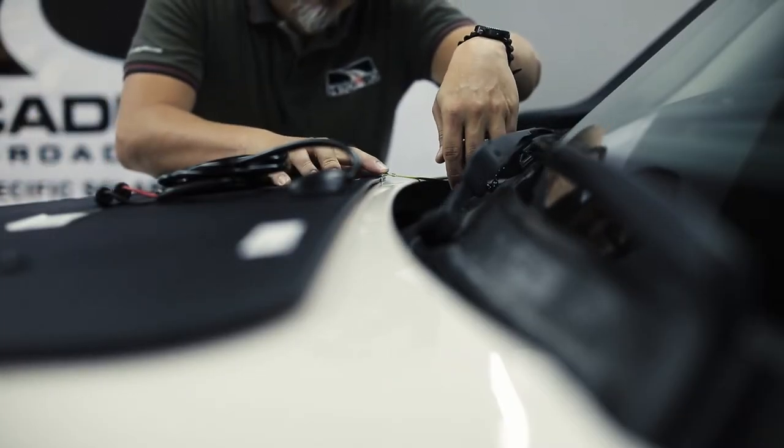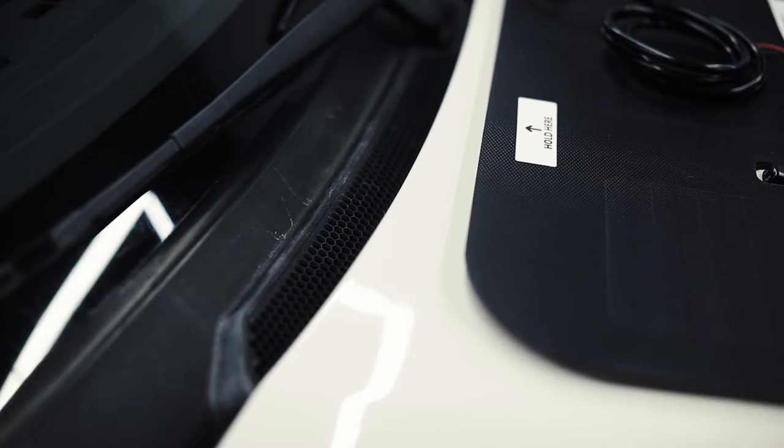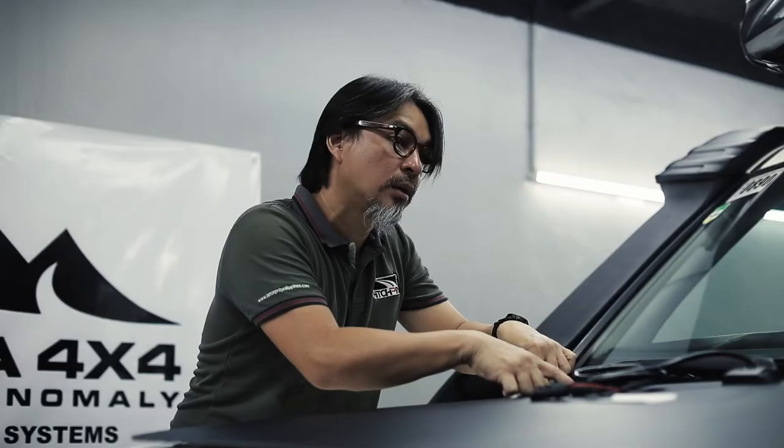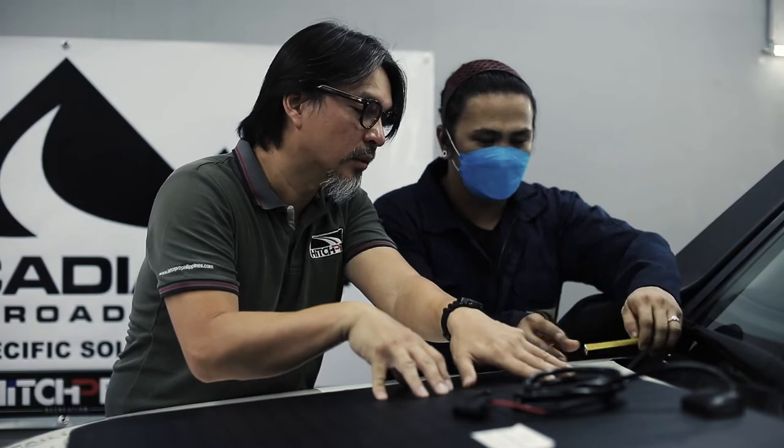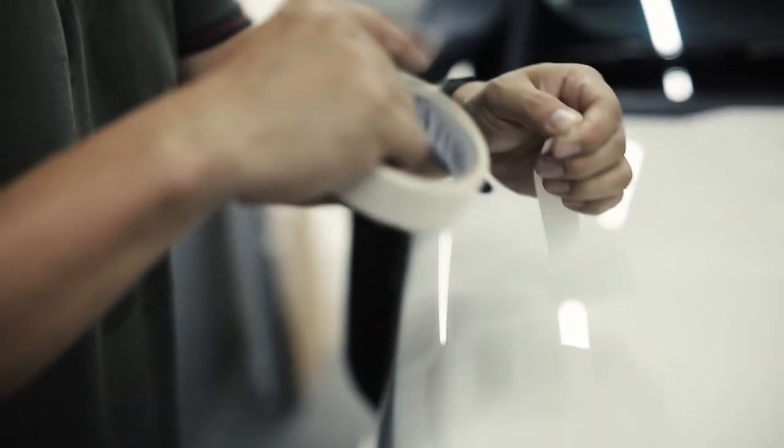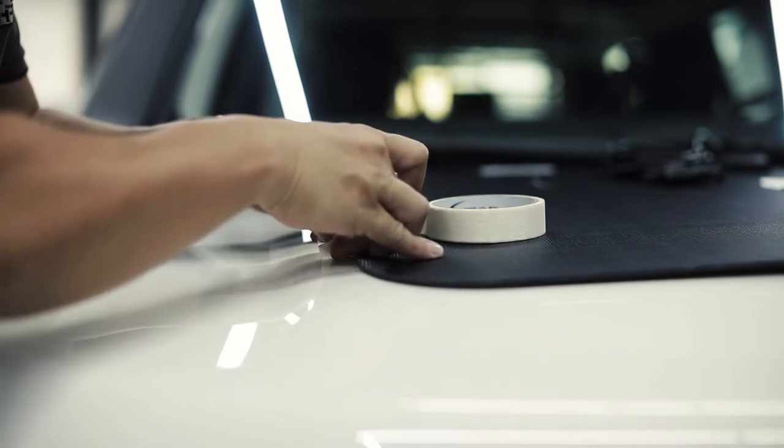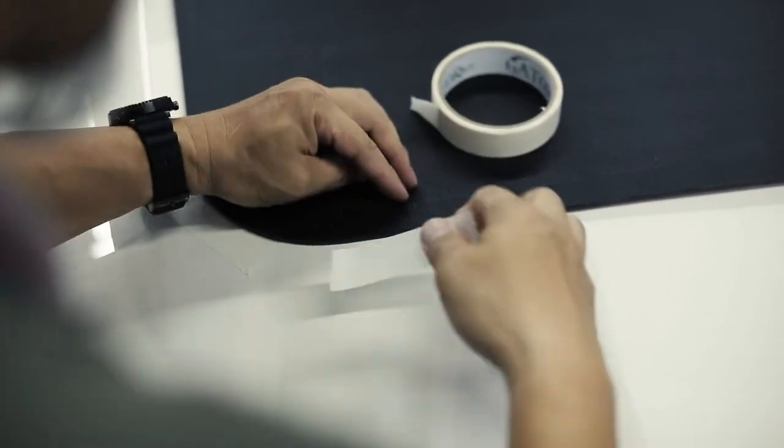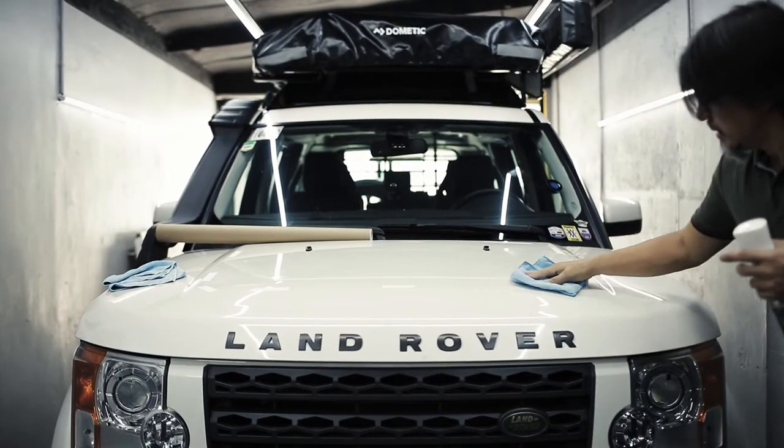I'm making sure both sides are even using a measuring tape. For easier installation on the Discovery 3, we're using the wiper washers as reference to center the solar panel. Once you're satisfied with the location, use masking tape to mark where the ends of the solar panel will be. We'll use this as a guide when centering the vinyl film.